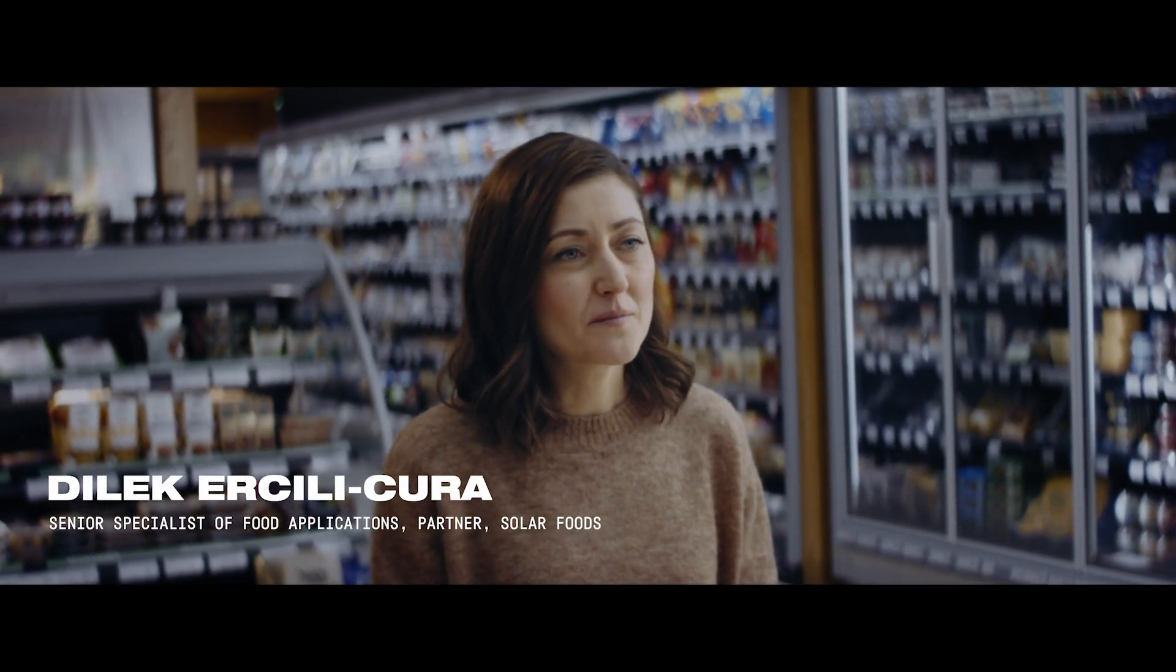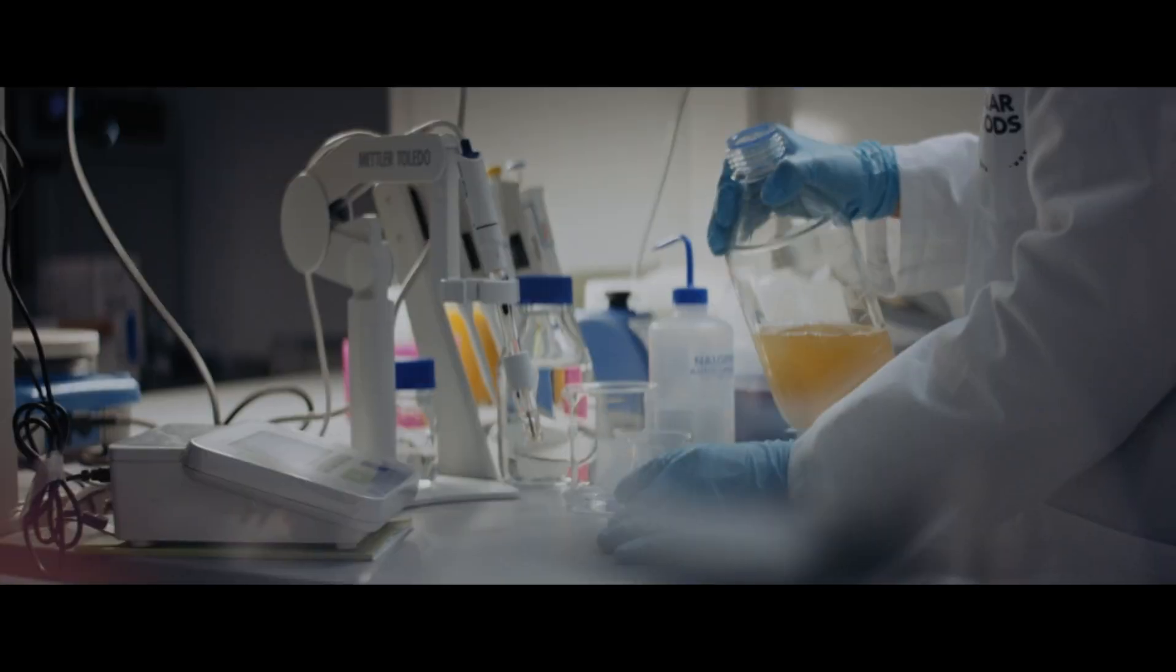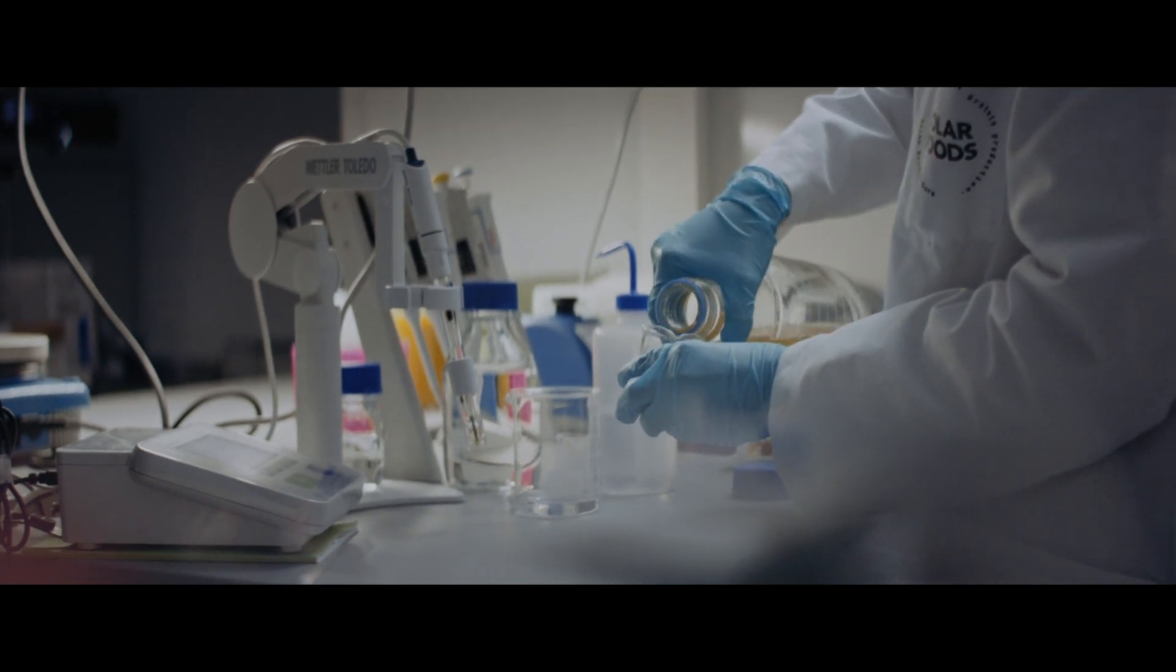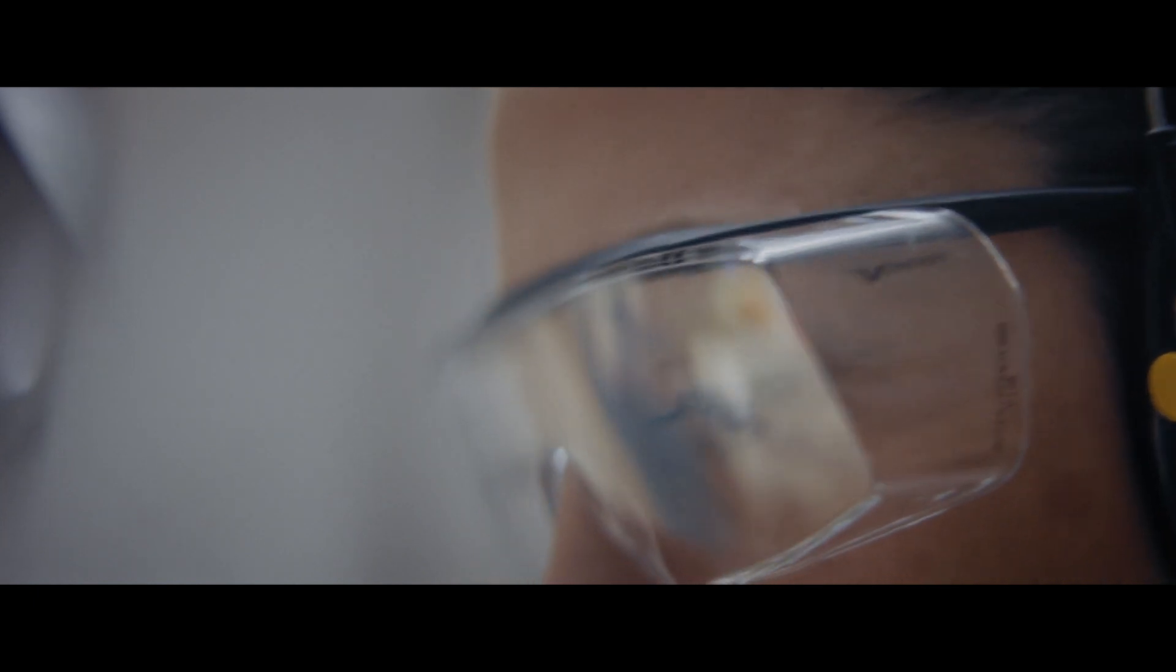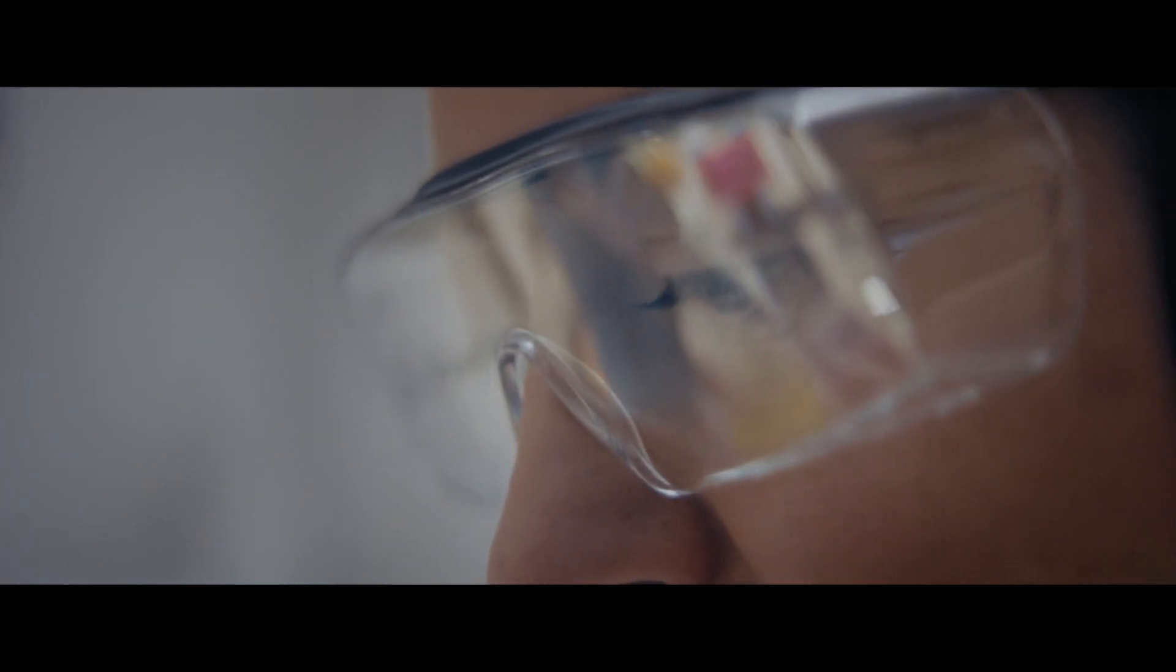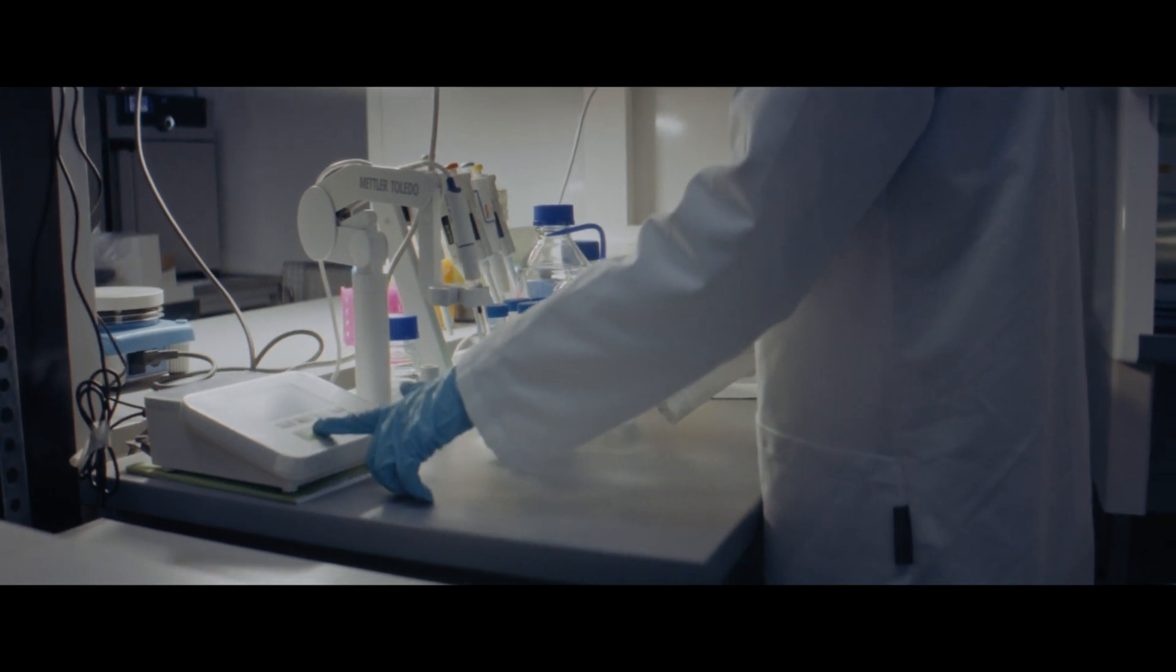The next big thing within protein production is definitely cellular farming, which is also referred to as cellular agriculture. It relies on cultivation of cells under controlled conditions for the industrial production of food instead of relying on conventional agriculture or animal husbandry.